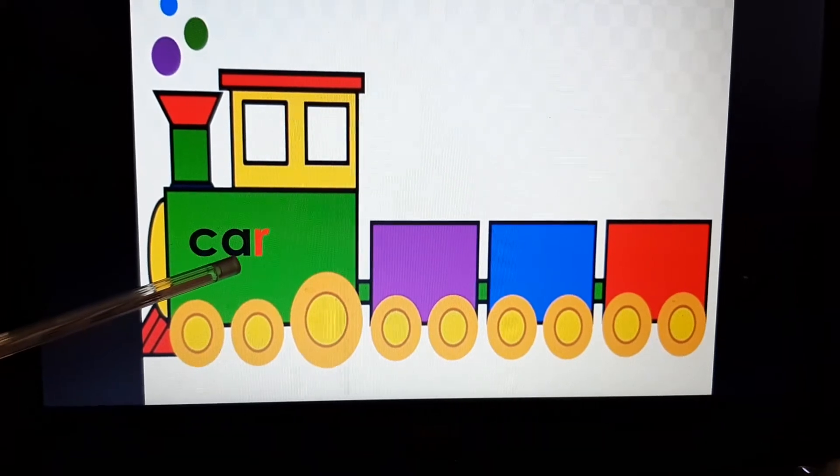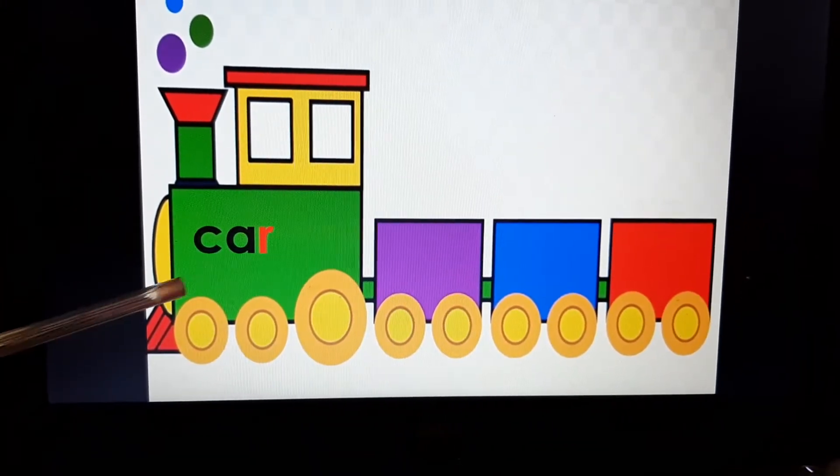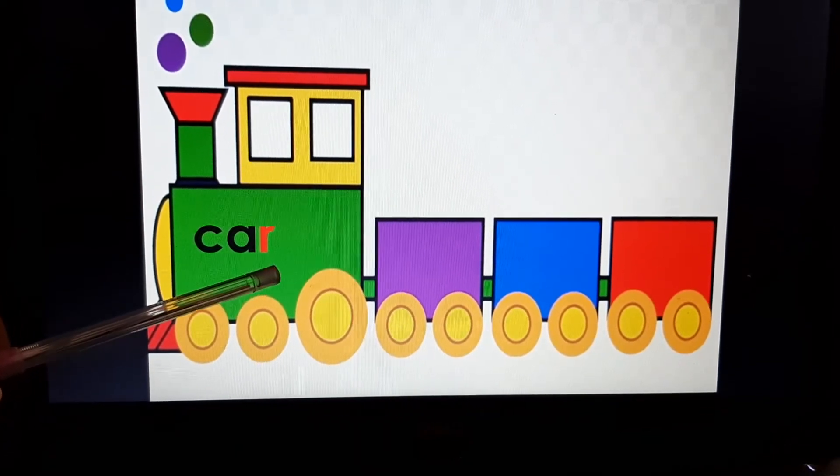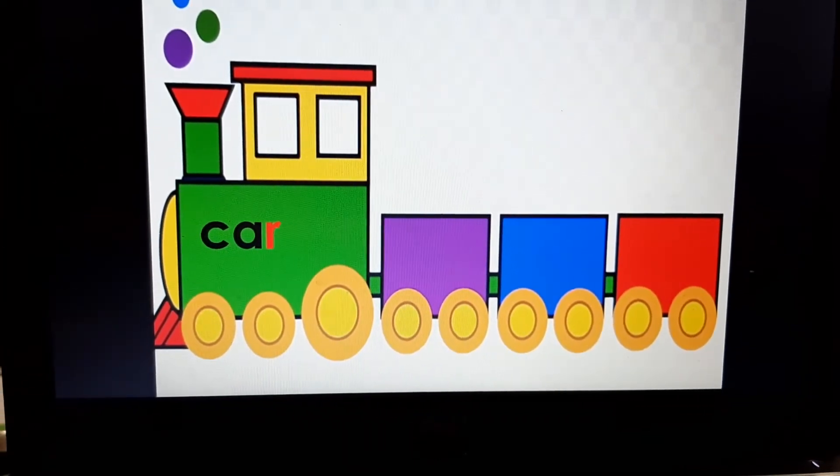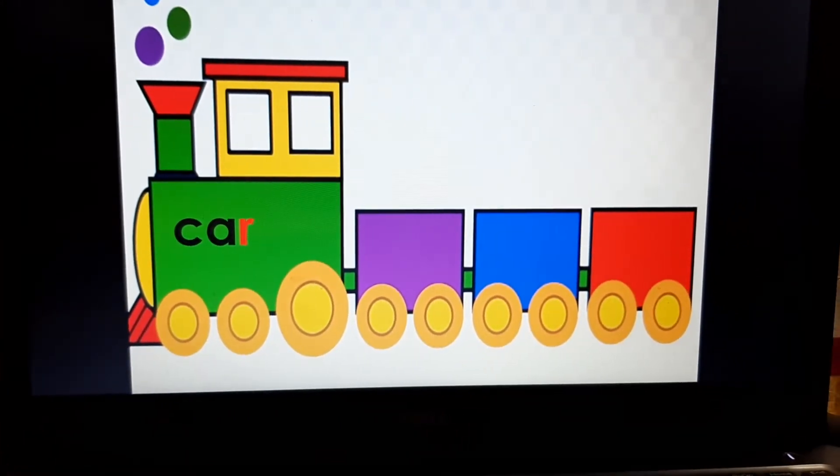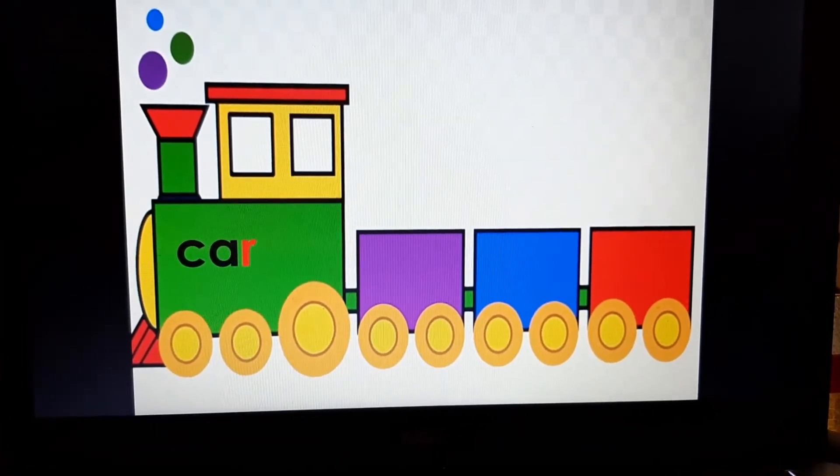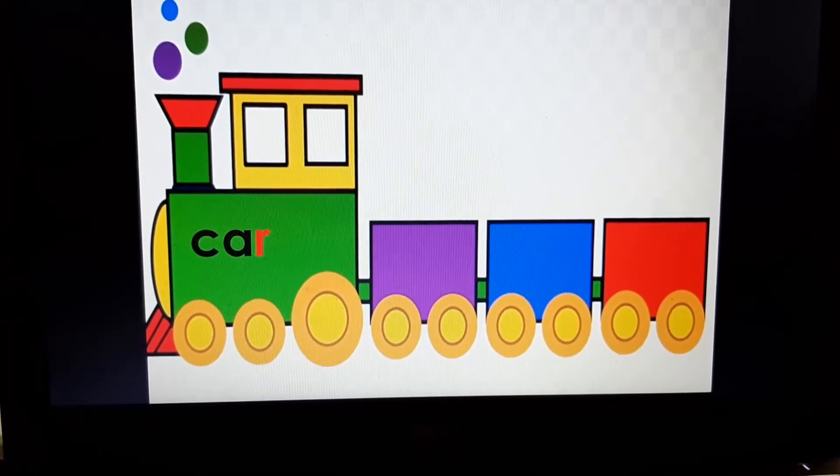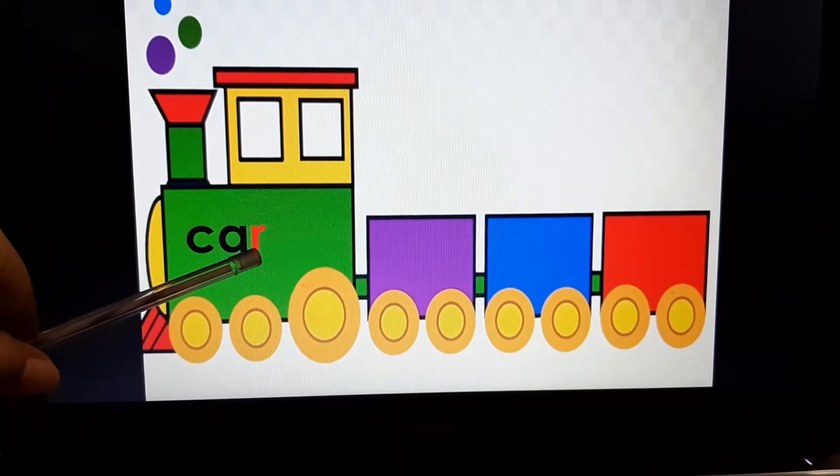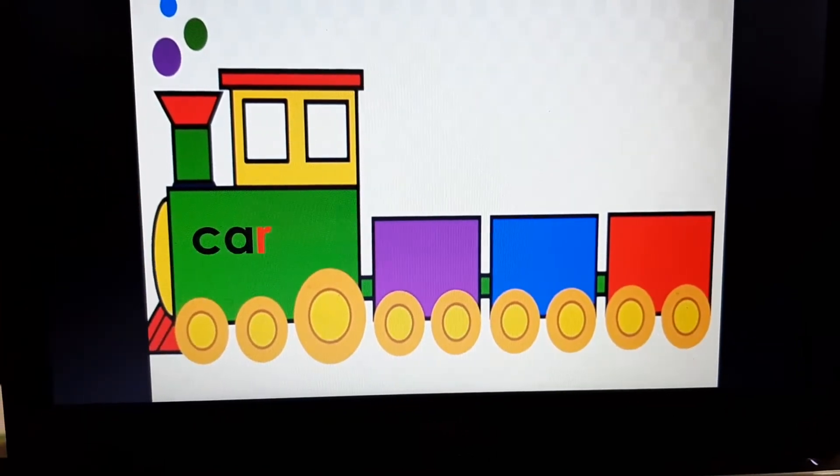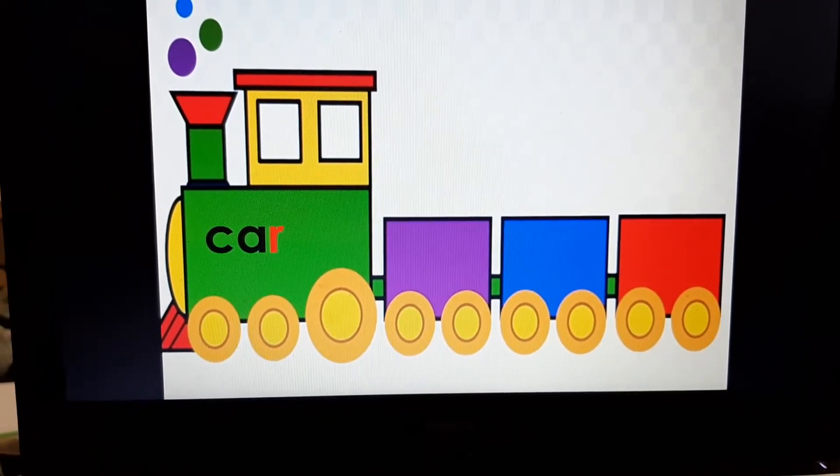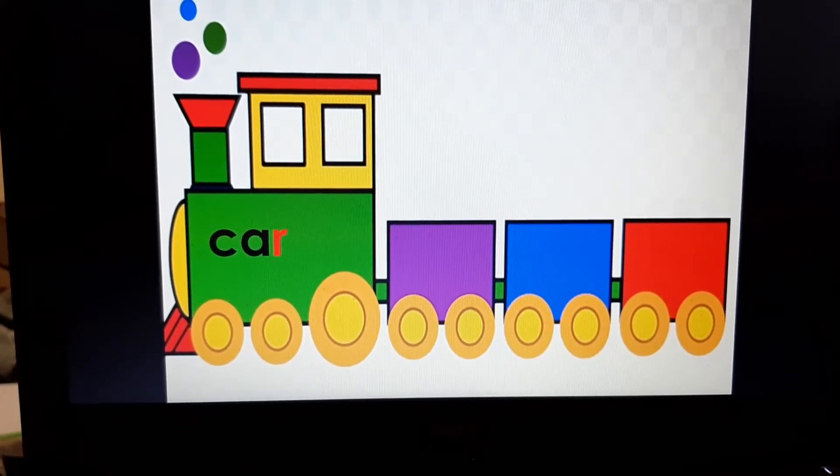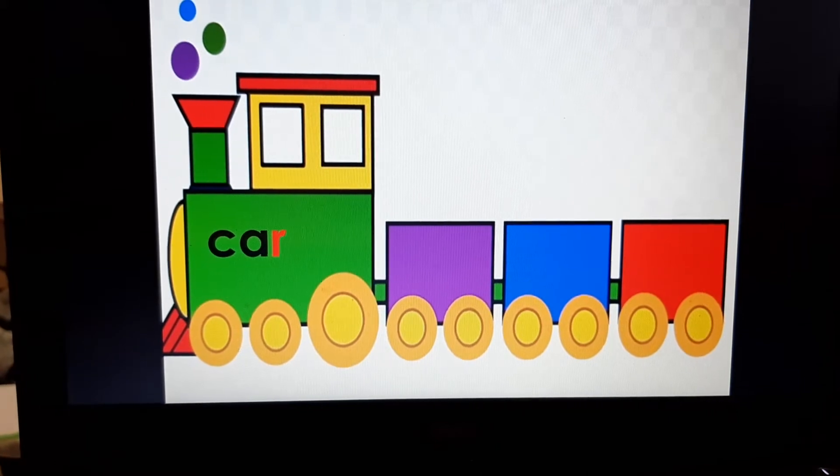C-A-R, car. And the last letter is R. Now, the next word which we are going to fill in this word train will begin with this letter. Last letter will become the first letter now.